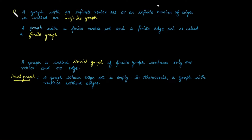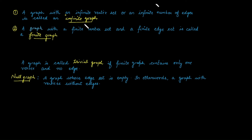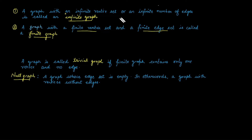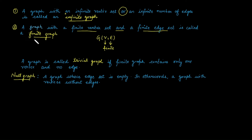There are two types of graphs: an infinite graph and a finite graph. This depends upon the vertex set and the edge set. A graph with an infinite number of vertices or an infinite number of edges is categorized as an infinite graph. Whereas a graph with a finite vertex set and a finite edge set is categorized as a finite graph. For an infinite graph, there is an OR condition — if the vertex set is infinite, or the edge set is infinite, or both are infinite, it is an infinite graph. For a finite graph, there is an AND condition — both the vertex set and the edge set must be finite.